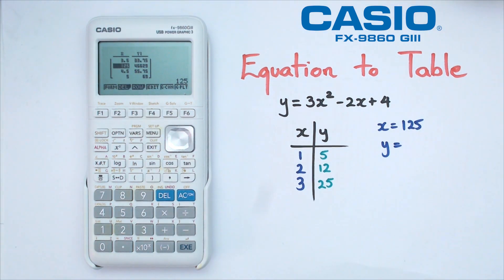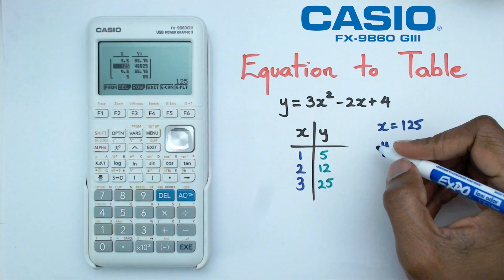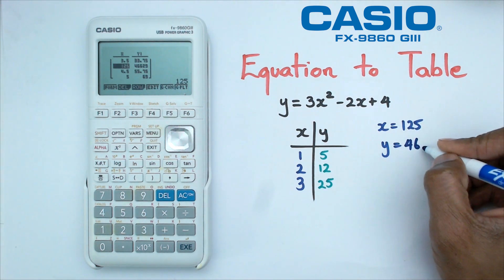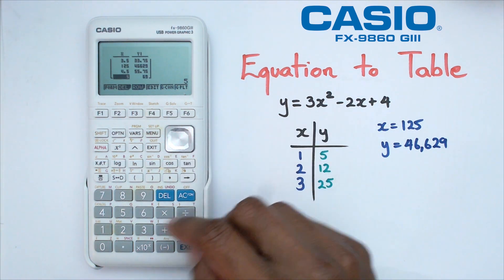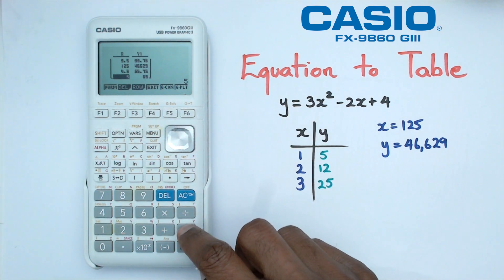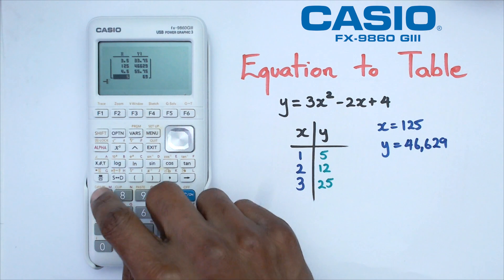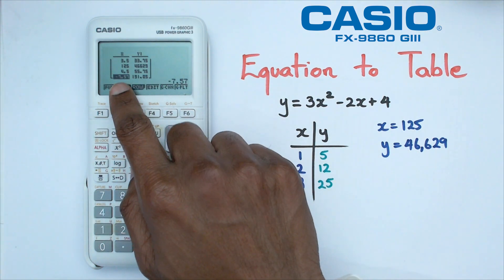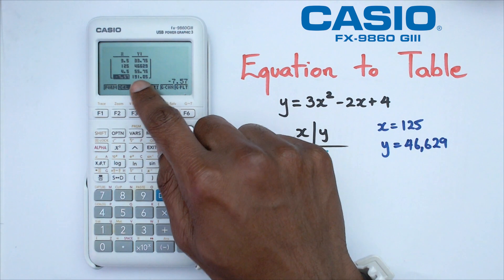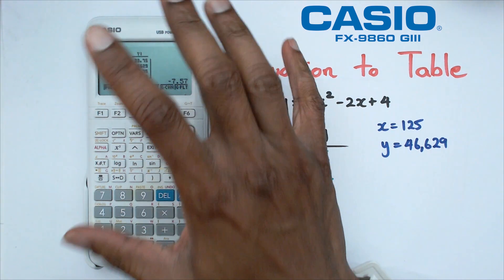Let's try another one. If x is equal to -7.57, we're going to put in -7.57, and again I've just put it in a random area there, and you can actually see what the y value is.